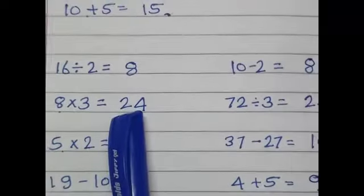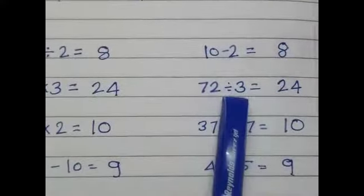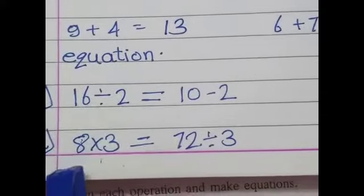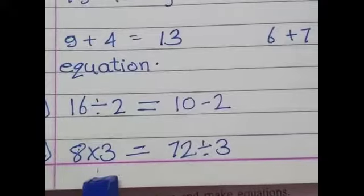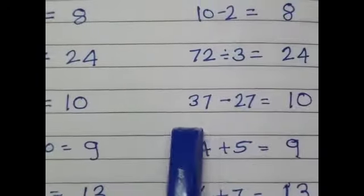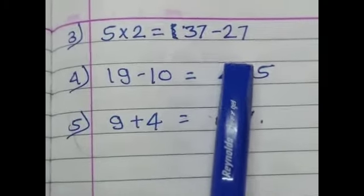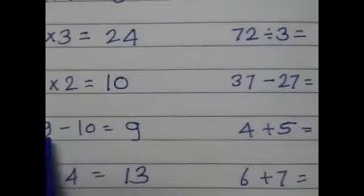The answer is same, the answer is same result, same, 24, 24. Now we make the equation. Look here, 8 multiplied by 3 is equal to 72 divided by 3. The answer is 24. Now 5 multiplied by 2 is equal to 10. 37 subtracts 27 is equal to 10. We make the equation: 5 multiplied by 2 is equal to 37 subtracts 27. Next, the answer is 9. Next the answer is 9.